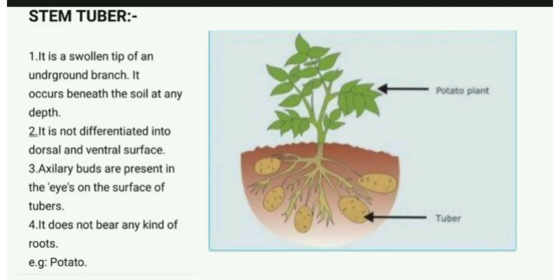Stem tuber is a swollen tip of an underground branch. It occurs beneath the soil at any depth and it is brown in color. It is not differentiated into dorsal and ventral surface. Axillary buds are present in the eyes on the surface of the tuber and it does not bear any kind of roots. The example is potato.